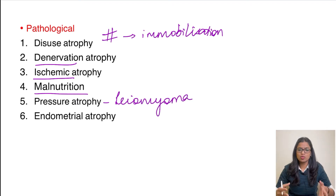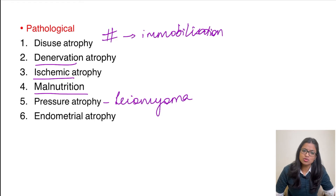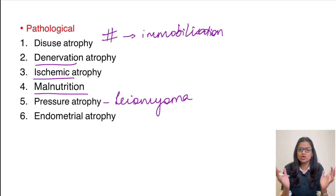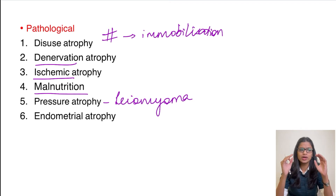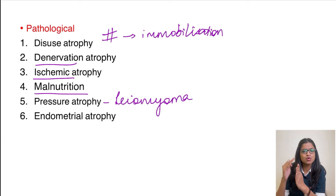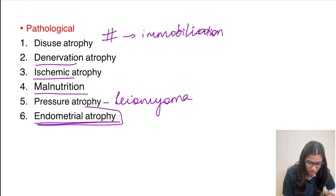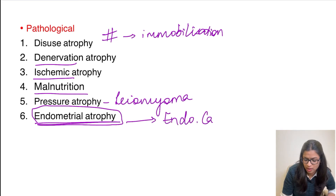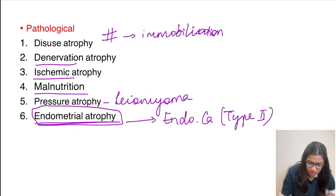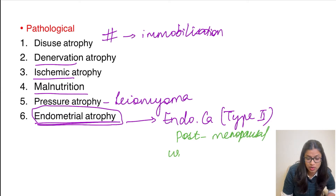Pressure atrophy: a leiomyoma — which is a benign smooth muscle tumor, most commonly seen in the uterus where it is called a fibroid — grows slowly and compresses the surrounding host tissue. Over time, this compressed host tissue undergoes atrophy, called pressure atrophy. The most important example is endometrial atrophy, which is a precursor of endometrial carcinoma type 2, occurring in the post-menopausal age group with the worst prognosis.